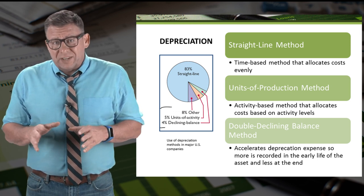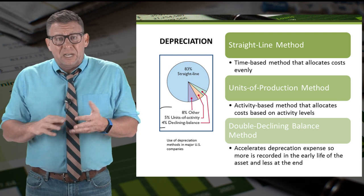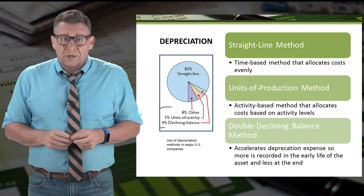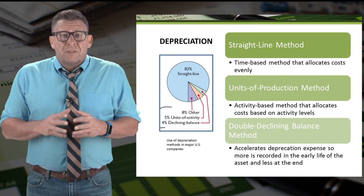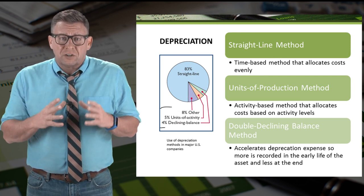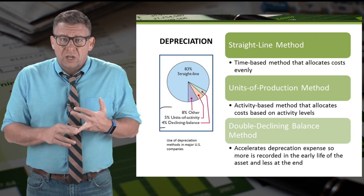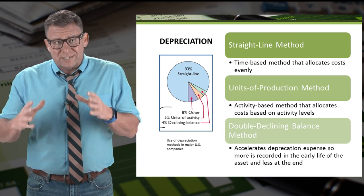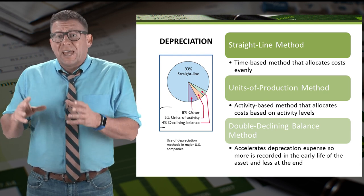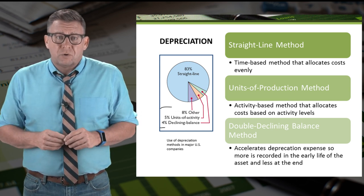The units of production method is an activity-based method — the more activity, meaning miles driven or units produced, the more depreciation expense recorded. The double declining balance method accelerates depreciation expense in the early years of the plant asset, so as an asset is more profitable and efficient, more depreciation expense is matched against that. As the asset needs more repairs and is less profitable and less efficient, less depreciation expense is recorded.